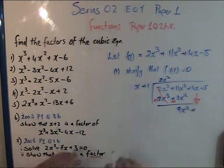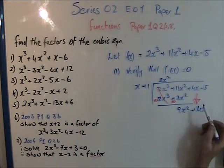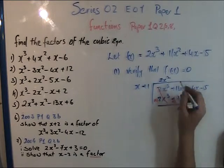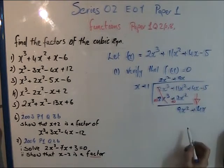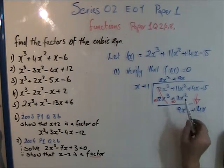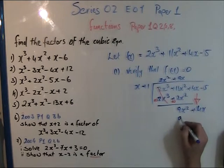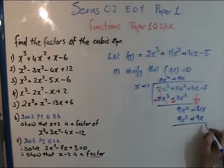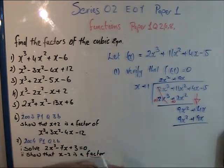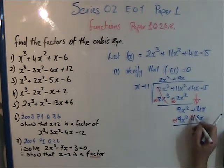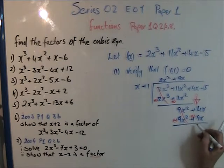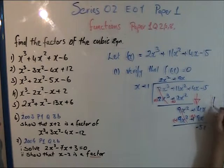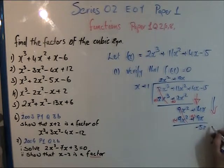Continuing: x goes into 9x² — that's 9x times. So 9x × x = 9x², and 9x × 1 = 9x. Change the signs: this becomes minus, this becomes minus. They cancel, and we're left with -5x. Bring down the -5.